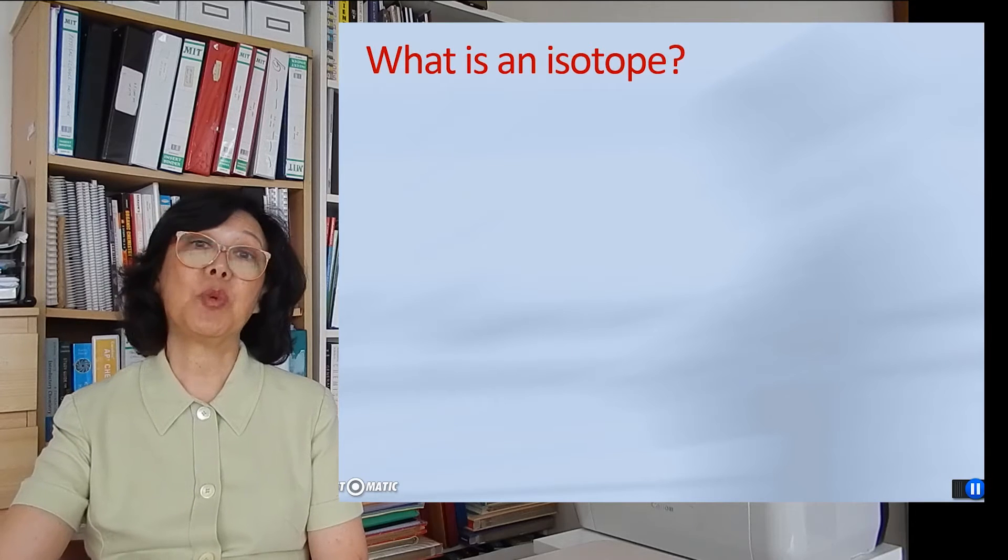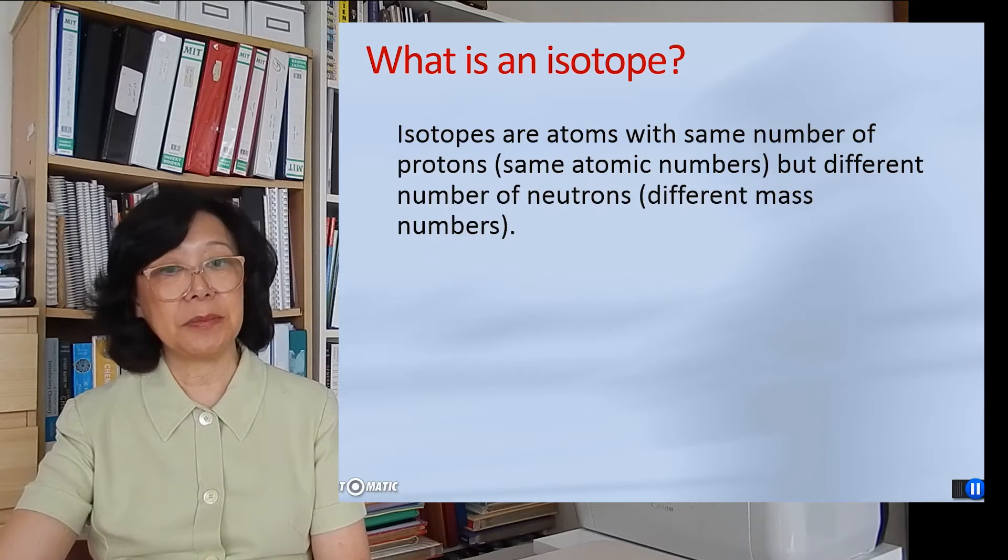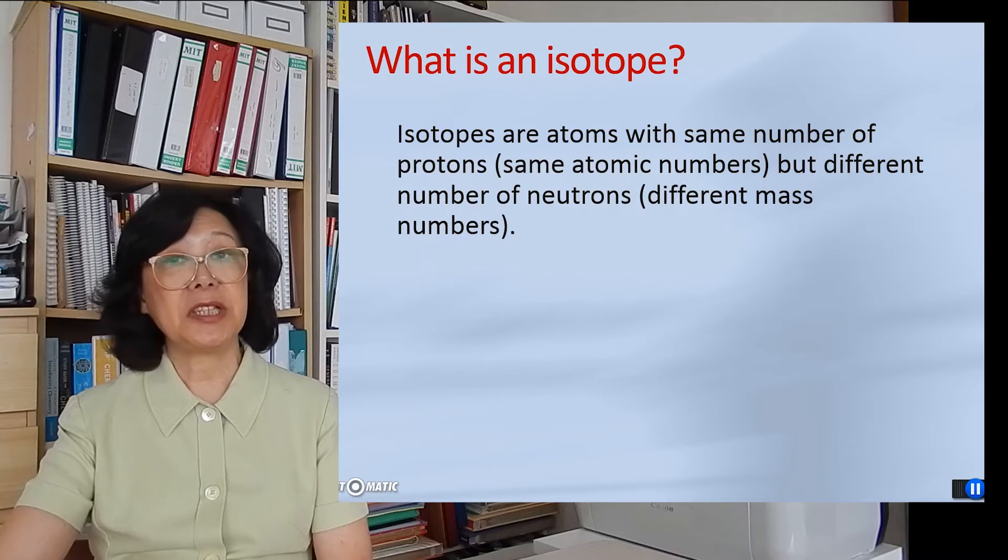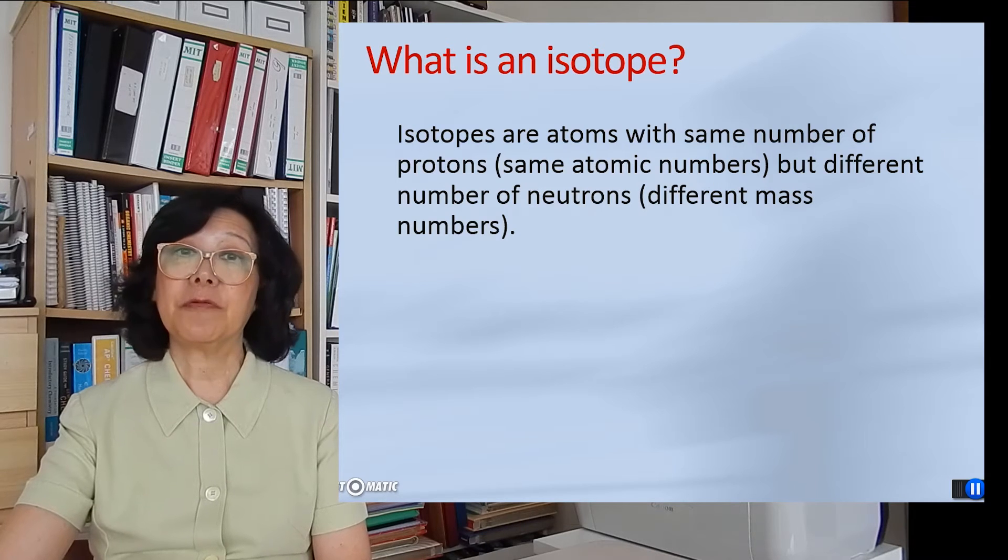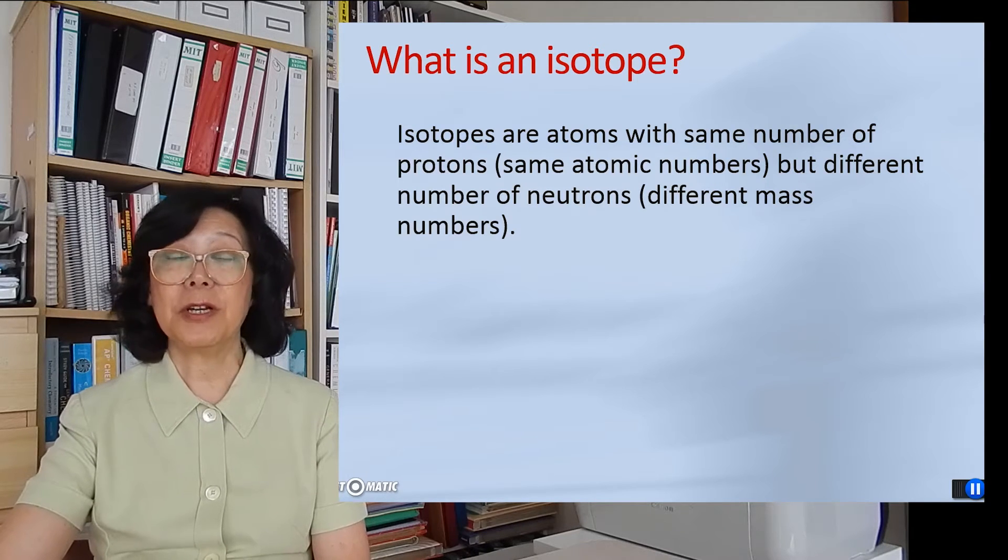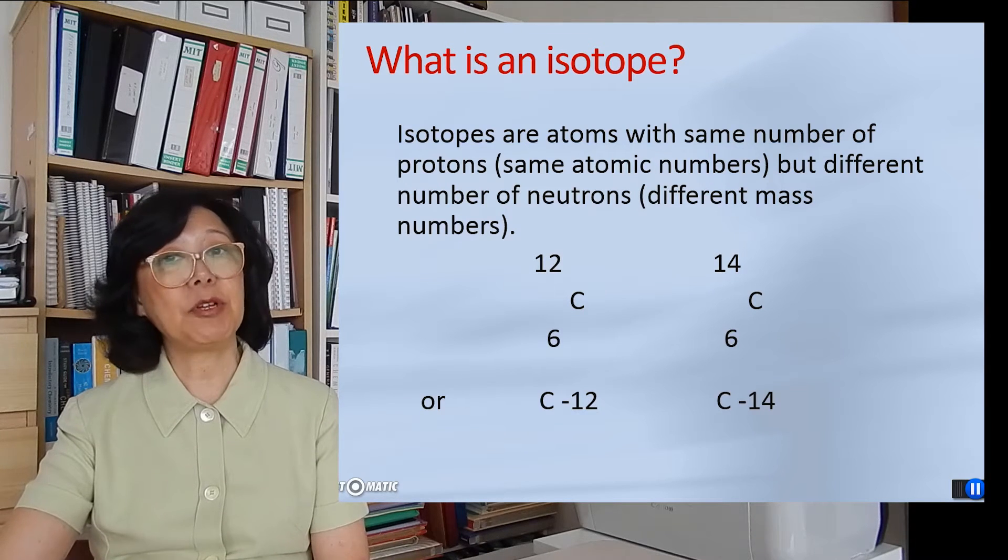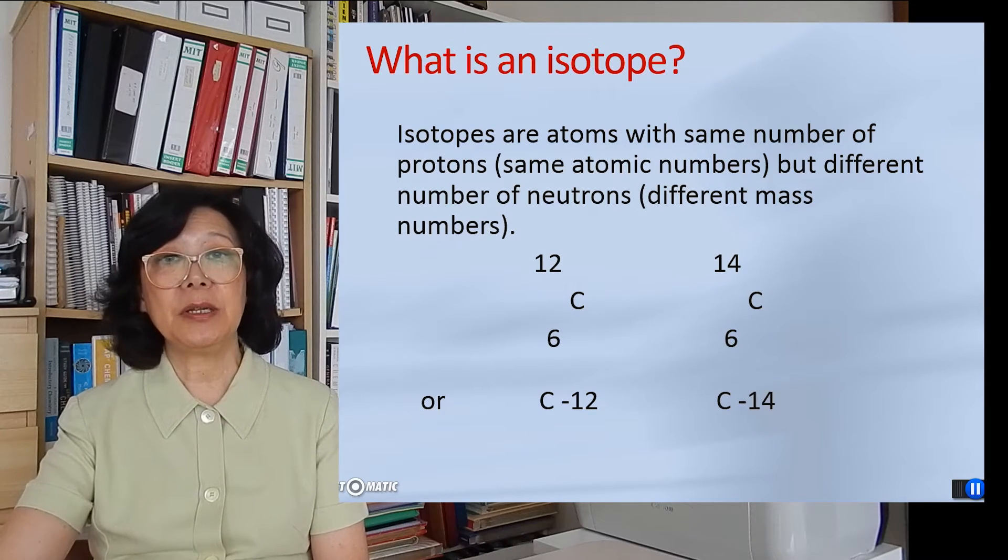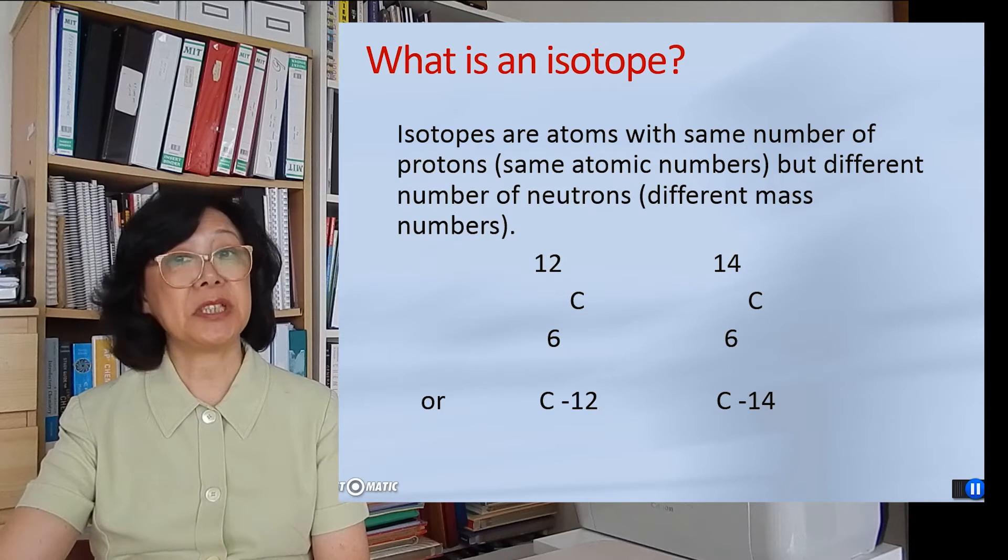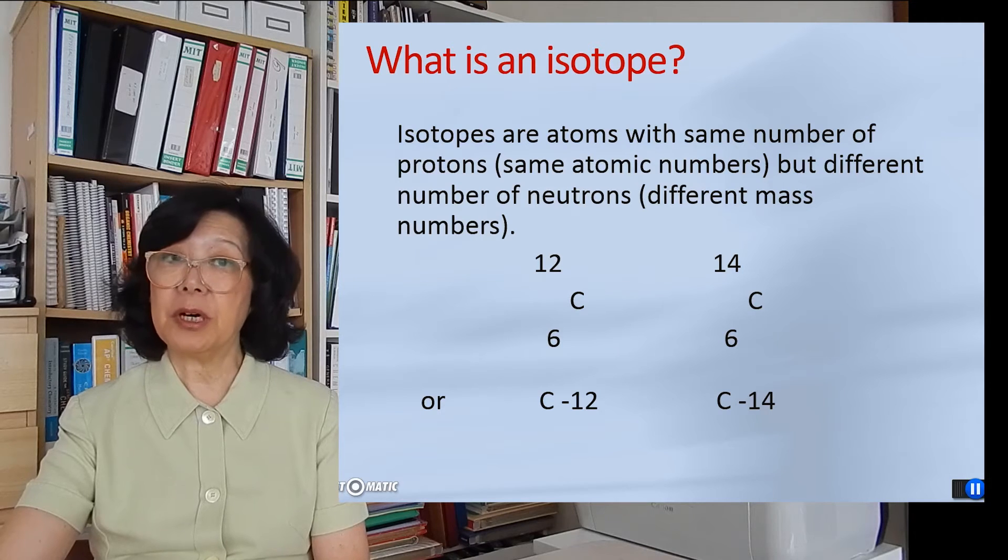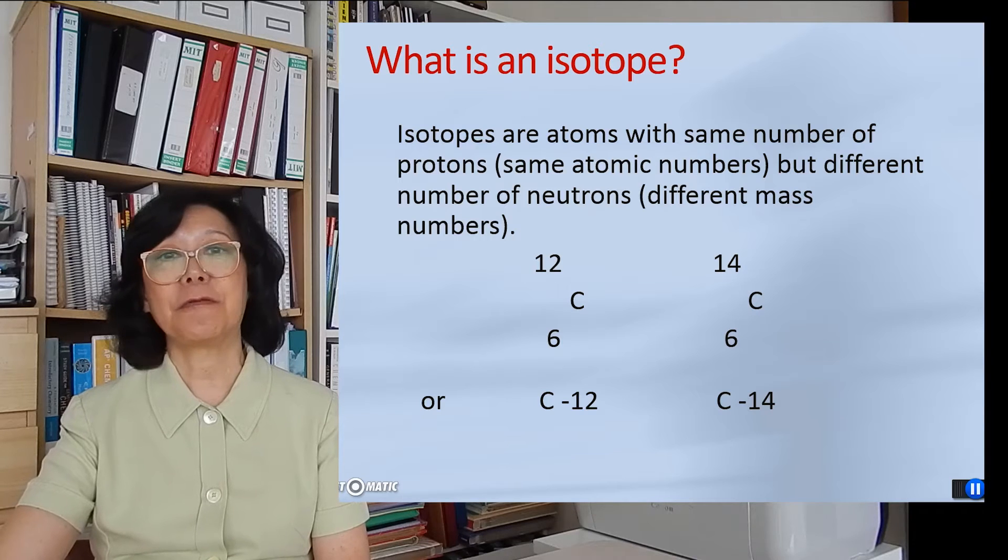Let's refresh ourselves on what is an isotope. Isotopes are atoms with the same number of protons, meaning same atomic numbers, but different number of neutrons, meaning different mass numbers. For example, let's compare carbon-12 with carbon-14. They are isotopes of carbon. They have the same number of protons, being number 6. But carbon-12 has 6 neutrons and carbon-14 has 8 neutrons. And that's the difference.